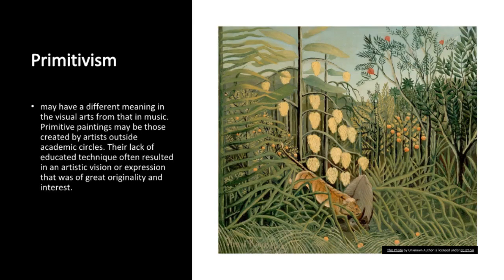Primitivism may have a different meaning in the visual arts from that in music. Primitive paintings may be those created by artists outside academic circles, whose lack of educated technique often resulted in great originality. Another use of the term refers to the choice of primitive subjects or the deliberate adoption of a style like that of unschooled artists. Primitivism in music rarely suggests lack of conventional technique; rather, it seeks to express ideas related to antiquity or some primitive culture. It can also be understood as a late development of 19th century nationalism.